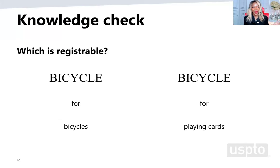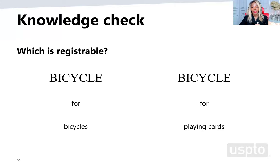Knowledge check: Is the term 'Bicycle' registrable as a trademark for bicycles? What about 'Bicycle' for playing cards? If you said 'Bicycle' for playing cards, you're right — 'Bicycle' as a brand name for bicycles is generic and you'll get a refusal. Notice that you can only determine whether something is descriptive or generic based on the goods and services offered, because it changes based on what kind of product or service it's being used to describe.